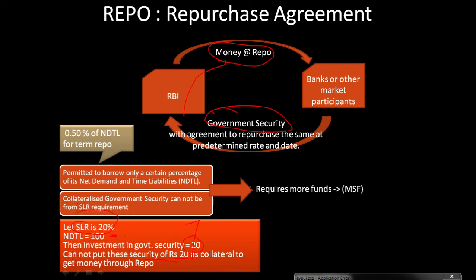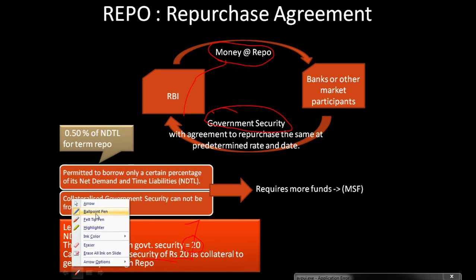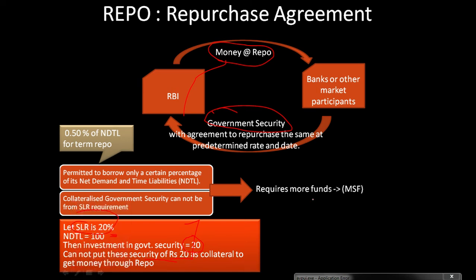If the bank requires further funds, it can use the Marginal Standing Facility, or MSF. The MSF is another window provided by the RBI through which banks can get extra funds when they are not able to meet their requirement through the regular LAF window. If MSF also falls short, the bank can borrow from other banks. Let's first understand the reverse repo concept before going back to MSF.